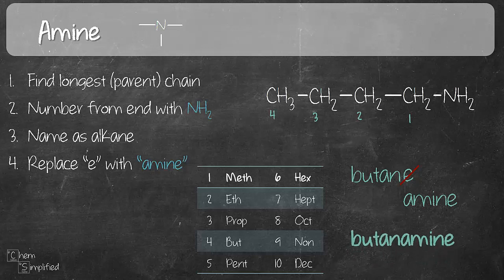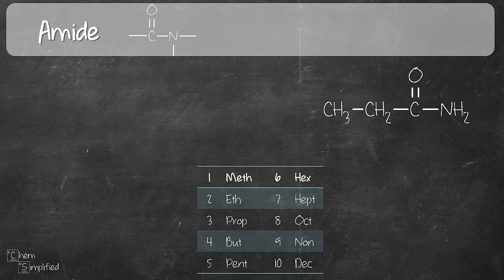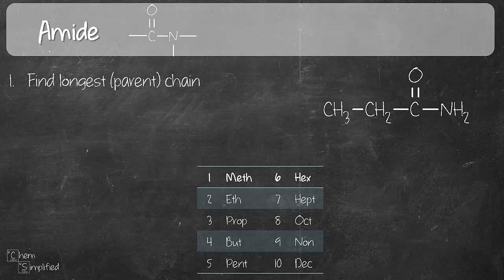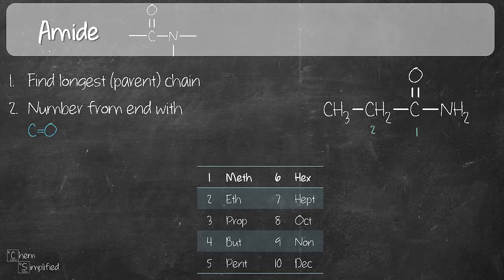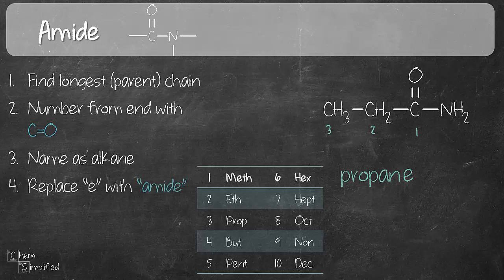Now we're going to move on to the cousin of amine, which is amide. The difference between amide and amine is just the presence of C double bond O. We start off with the longest chain — in this case, three carbons — and we start numbering from the end that has C double bond O, so we number from the right. Name it as an alkane: three means propane. Then take out the E and replace it with amide. The name is propanamide.